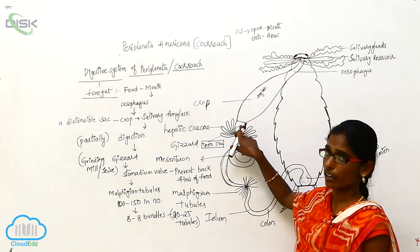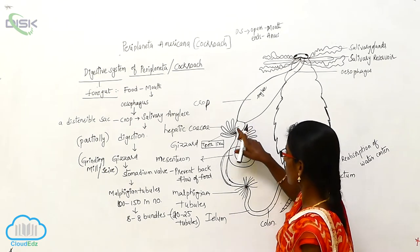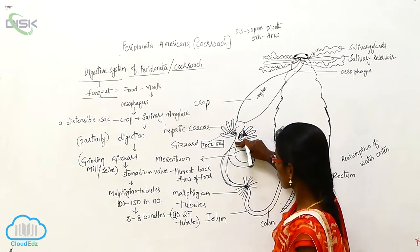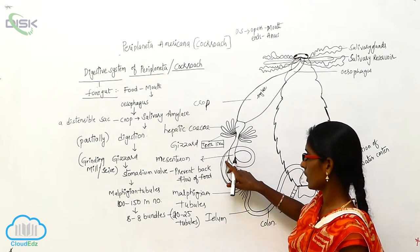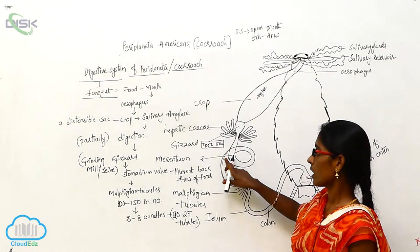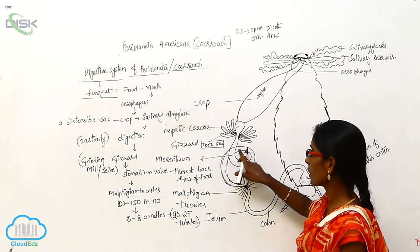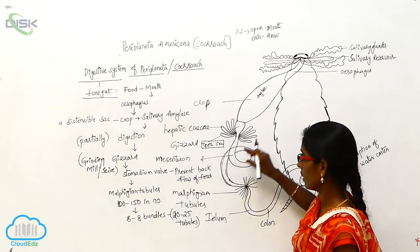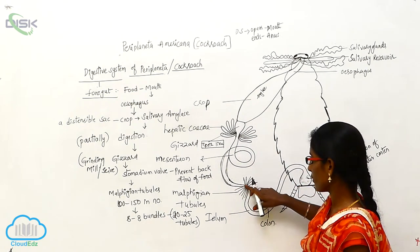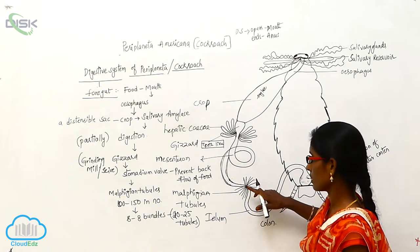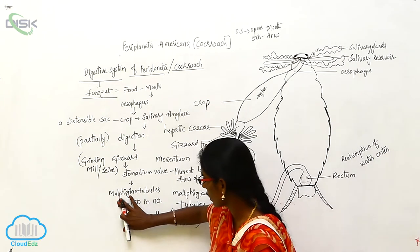Here the food material undergoes absorption. After absorption it goes to the mesenteryon. The mesenteryon has a cuticle layer that protects against hard particles in the food material. The totally digested food material goes to the Malpighian tubules, which are 100 to 150 in number.